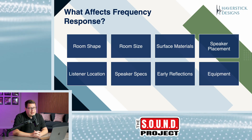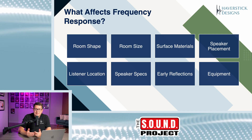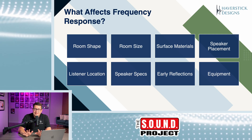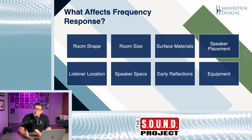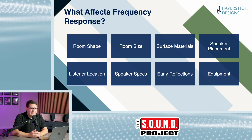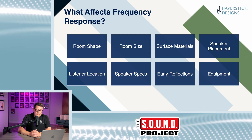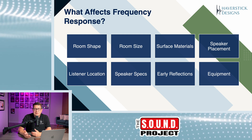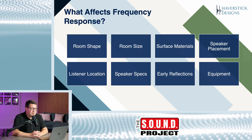You have to look at what is going to affect the frequency response — what's going to cause these peaks and dips. The room shape and room size really factor in, because depending on your room ratios, when it comes to a studio, you're going to have room modes that impact the lower frequency side of things. The shape is also going to affect whether there's any focusing or buildup of certain frequencies.